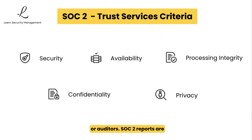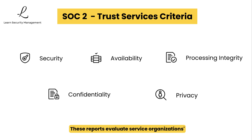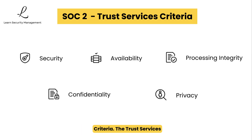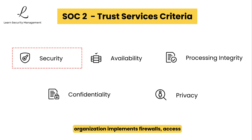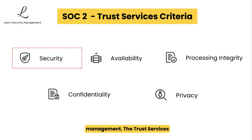SOC 2 reports are much more relevant to cybersecurity professionals. These reports evaluate service organizations' controls related to the trust services criteria. The trust services criteria include security — that is, protection against unauthorized access, both physical and logical — covering how the organization implements firewalls, access controls, intrusion detection, and vulnerability management.